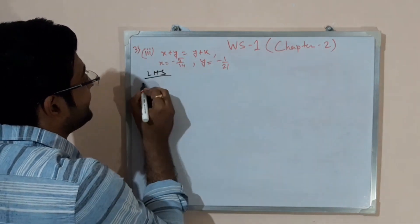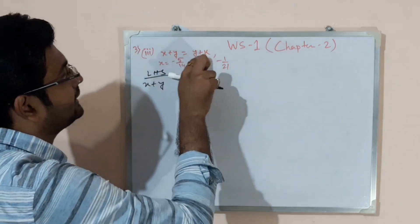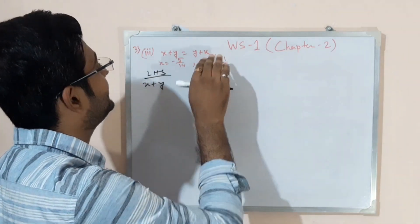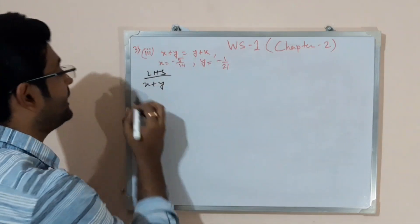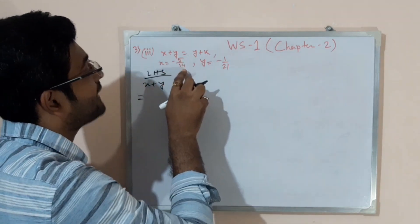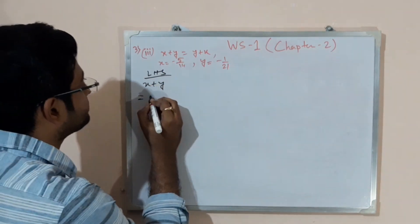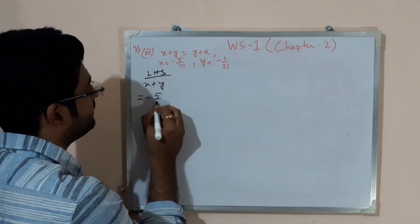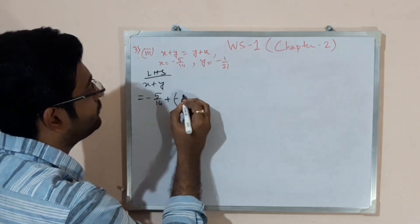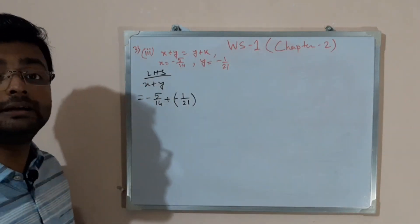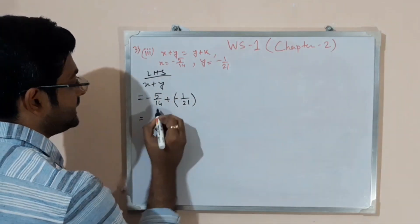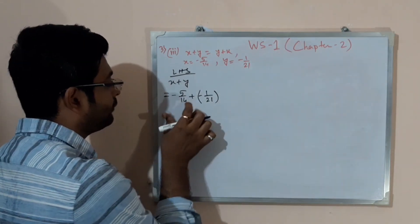Left Hand Side is x + y. The value of x is minus 5 by 14, so I'll write minus 5 by 14 plus bracket, because the value of y is negative. I put a bracket because you cannot write plus and minus signs together. Now find the LCM of 14 and 21.